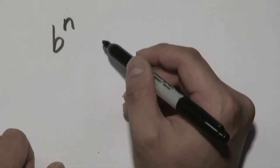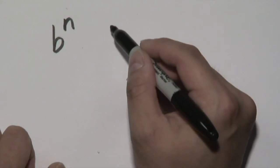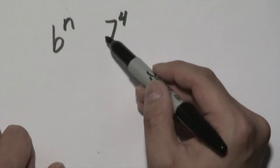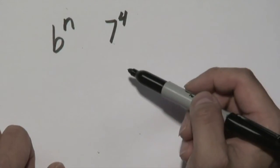Now how you would write this, for example, and say it, they correspond together. So if you have something like 7 to the 4th, it will be 7 to the 4th power.